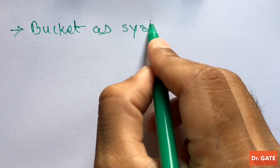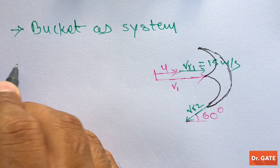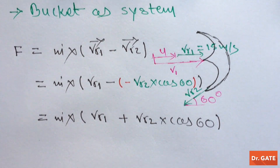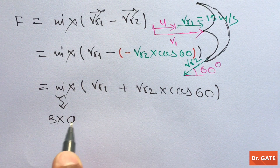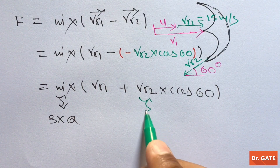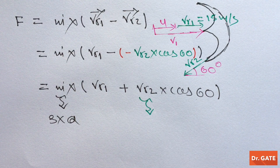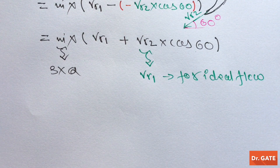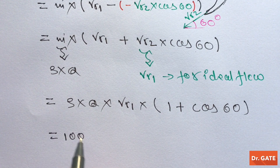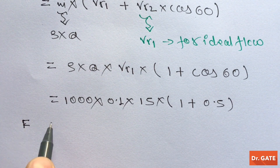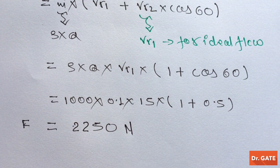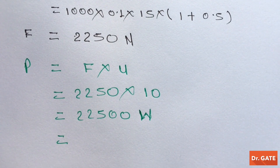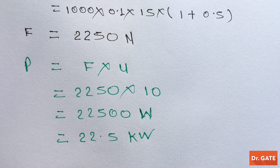If we take the bucket as a system, the tangential component of force has a specific expression. Taking the magnitude of relative velocity, where m-dot is density into discharge, and for ideal flow the magnitude of relative velocity at exit equals that at inlet, on putting these expressions and the given values into the equation, we get the tangential component of force as 2250 Newton. So the power developed is 22500 Watt, which is also equal to 22.5 Kilowatt. Option C is correct.